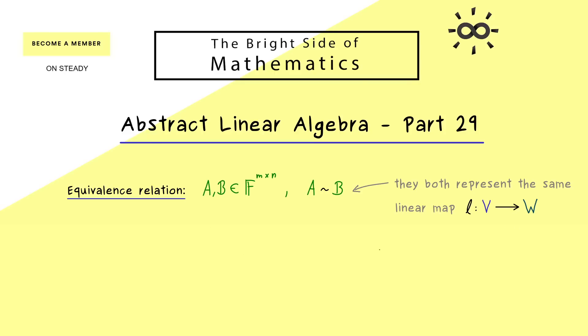And moreover we have also learned that we can describe this property without using the linear map at all. This works by taking invertible matrices, which we can call S and T, such that we can write the matrix B as the matrix product S times A times T. Indeed this is the definition one can easily remember.